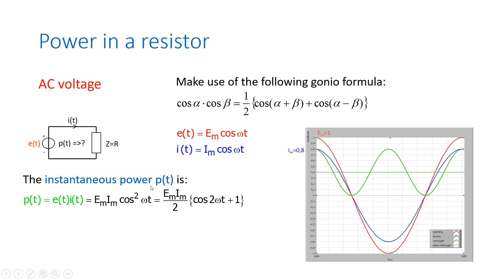Now we can use this goniometric formula and we get Em times Im times half times the cosine of the sum of alpha and beta. Since alpha and beta are both omega times T, it's the cosine of 2 times omega times T, plus half times the cosine of alpha minus beta — which is omega T minus omega T — which is the cosine of zero, which equals one. So this is the expression of my instantaneous power at every point in time. And that double frequency we saw in the curve is also expressed in this formula, because here we have that double frequency.